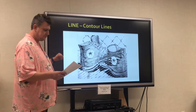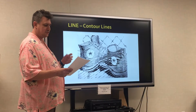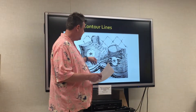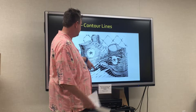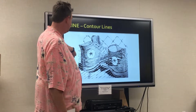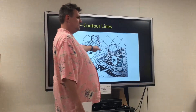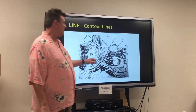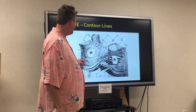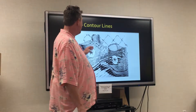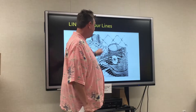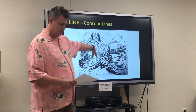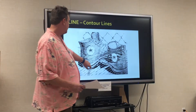Contour lines are the lines that describe the shape of an object and the interior detail that it has. So we have this pair of Chucks — not necessarily an outline of the whole thing, but by the contours we've created the shape within there.